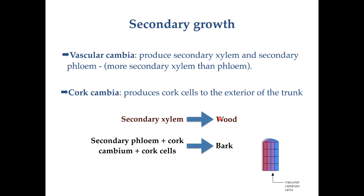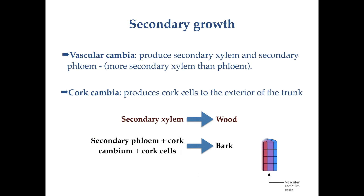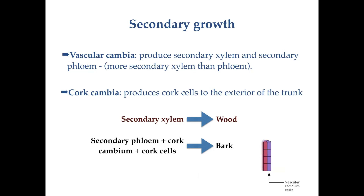The wood of a tree is secondary xylem; the bark is secondary phloem, cork cambium, and cork cells. If you remove the bark of a tree, you remove the phloem, cork cambium, and cork cells. Without phloem — which transports sugars and nutrients — the tree will essentially starve. Think about which parts of the tree die first based on the direction of phloem flow.